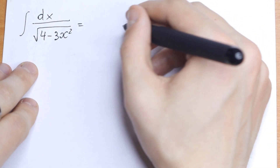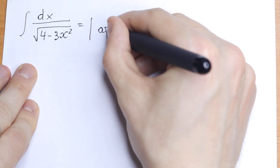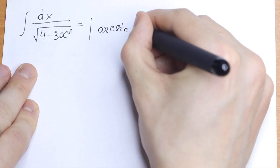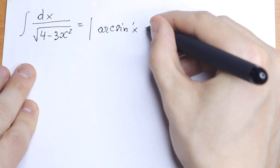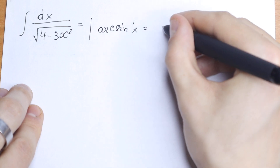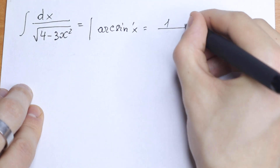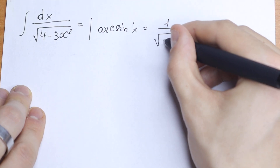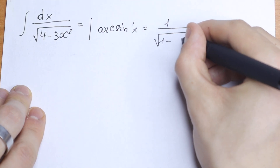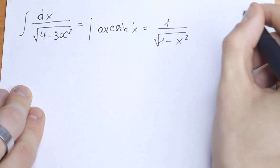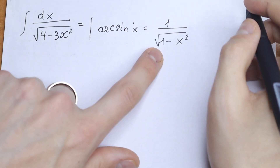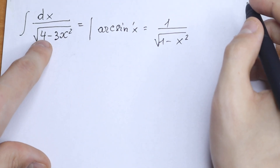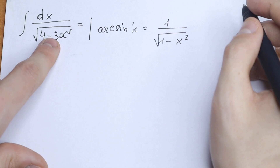First of all, we know that arcsin(x), if we're talking about its derivative, will be equal to 1 over the square root of 1 minus x squared. So this integral looks something like that case.